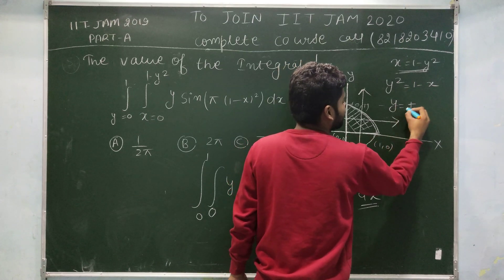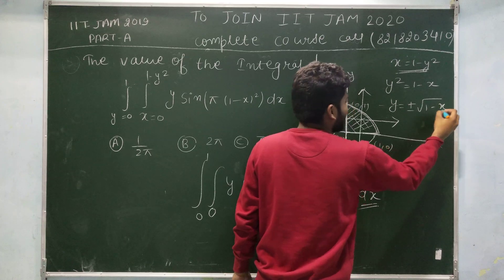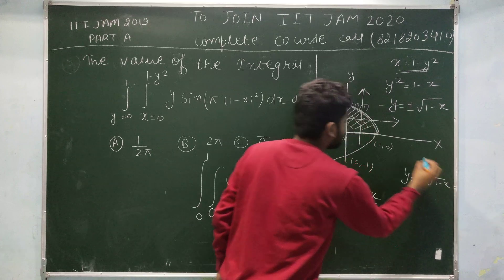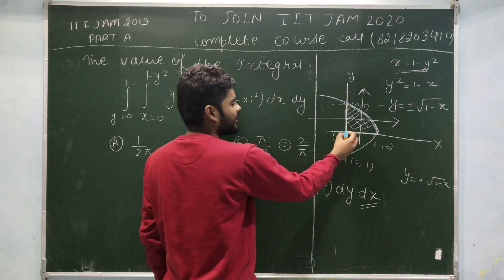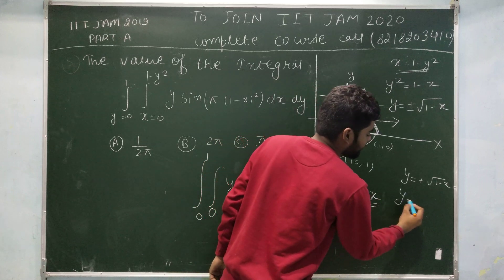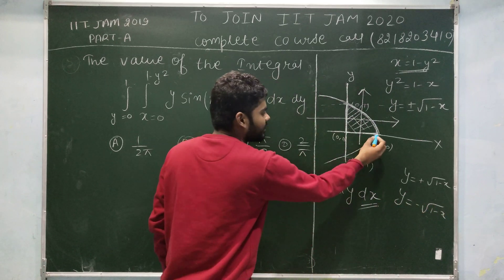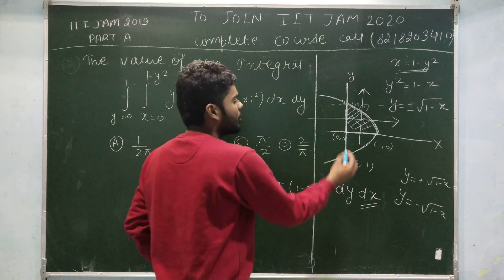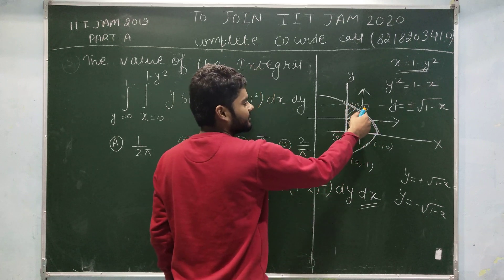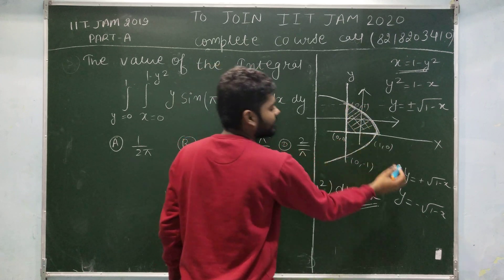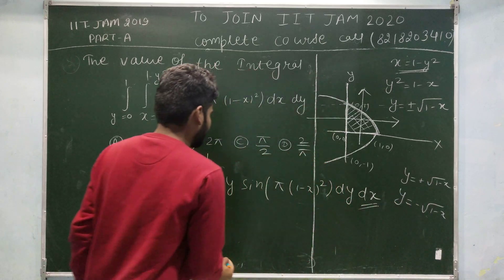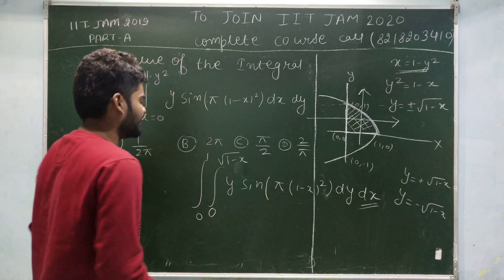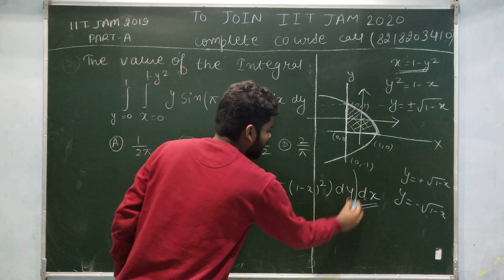Solving further, y equals plus or minus √(1-x). y equals +√(1-x) corresponds to the upper branch of the parabola where y is positive, and y equals -√(1-x) corresponds to the lower branch where the value is always negative. In our region, when you exit, you get y equals +√(1-x). So the inner limits of y go from 0 to √(1-x), and now we can solve this integration very easily.